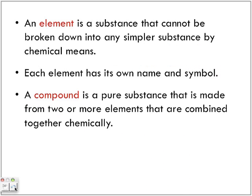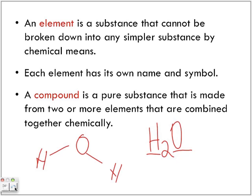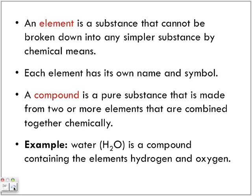A compound is a pure substance that is made from two or more elements that are combined together chemically. For example, H2O — hydrogen and oxygen are the two elements, but put together they form a compound called H2O, our water molecule. Water is an example of a compound containing hydrogen and oxygen.